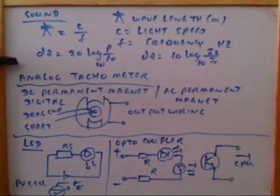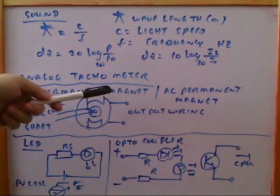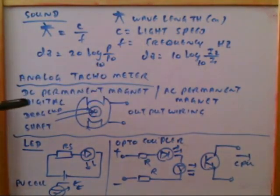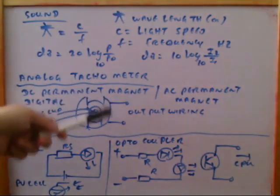Here is the analog tachometer. Tachometer is utilized to measure the speed of the machine. So there will be the DC permanent magnet tachometer, AC permanent magnet tachometer, and the digital tachometer. This is the construction.